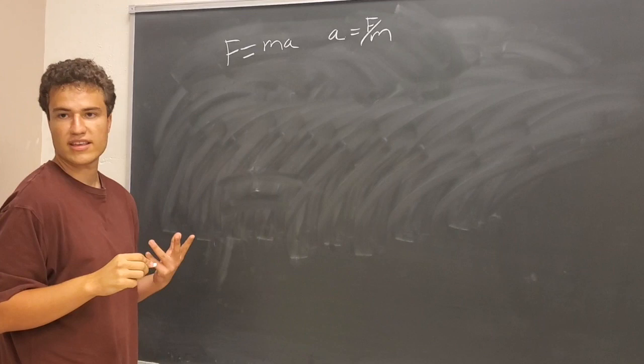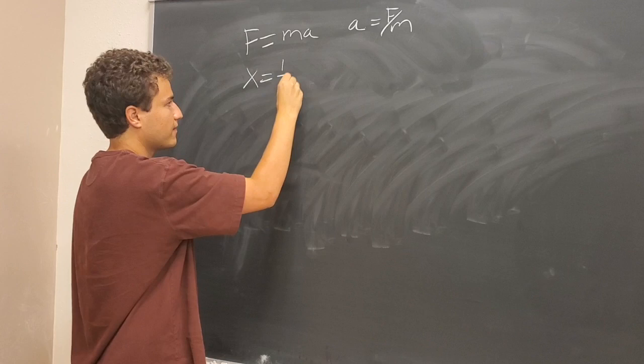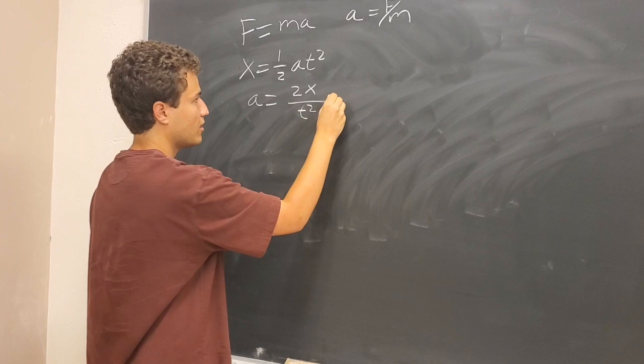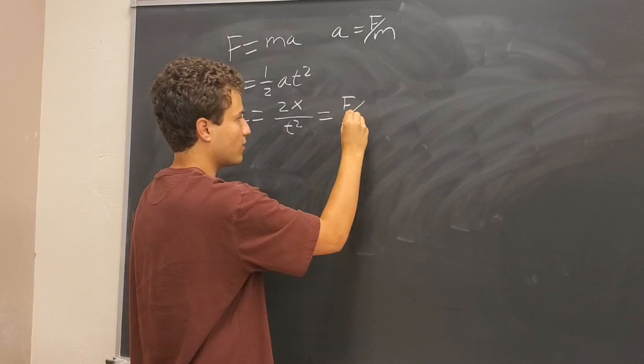The way we're going to prove this is by using another equation of accelerations, the basic kinematic equation x equals one-half acceleration times t squared, or a equals two times the distance traveled over t squared, which should, if Newton's second law is correct, equal force over mass.